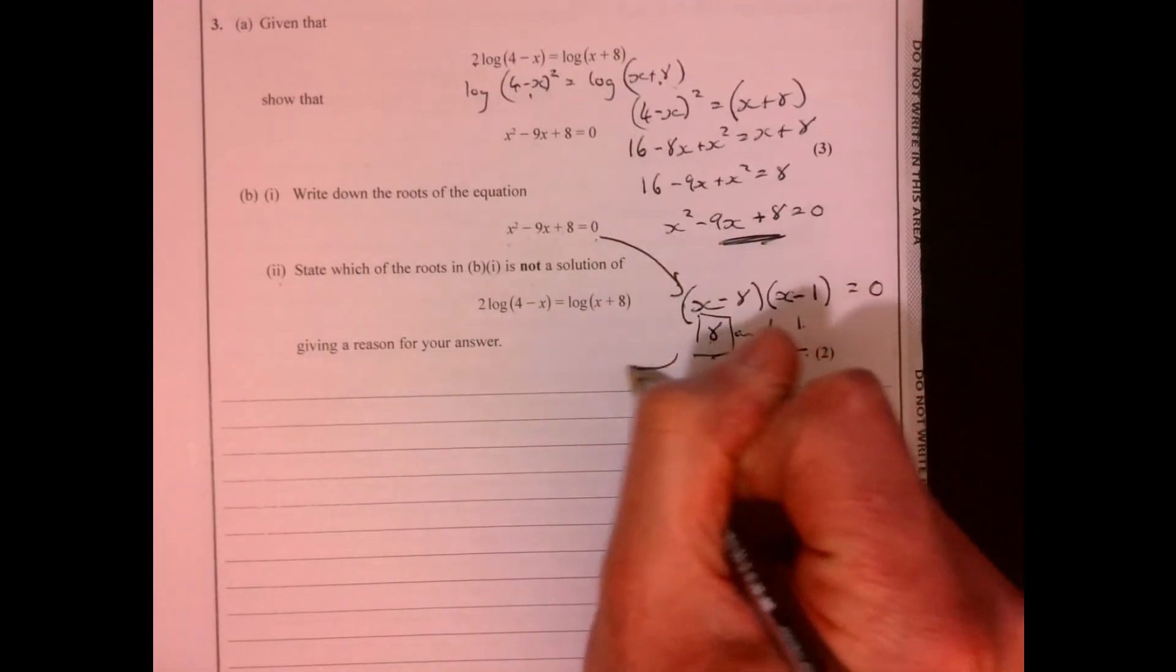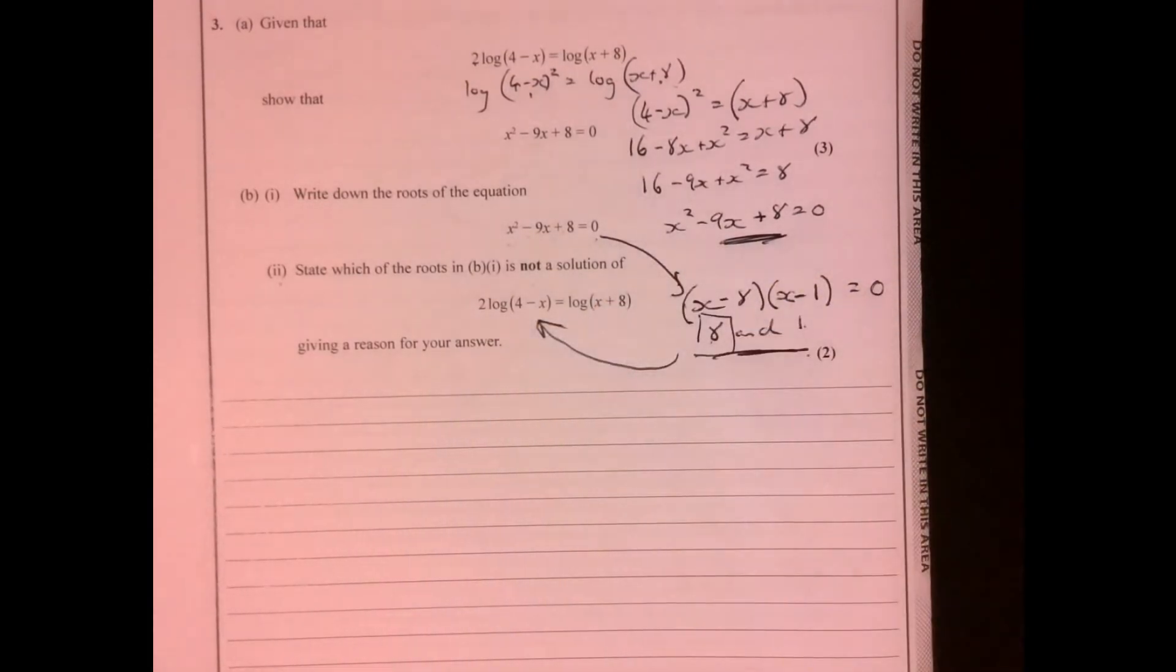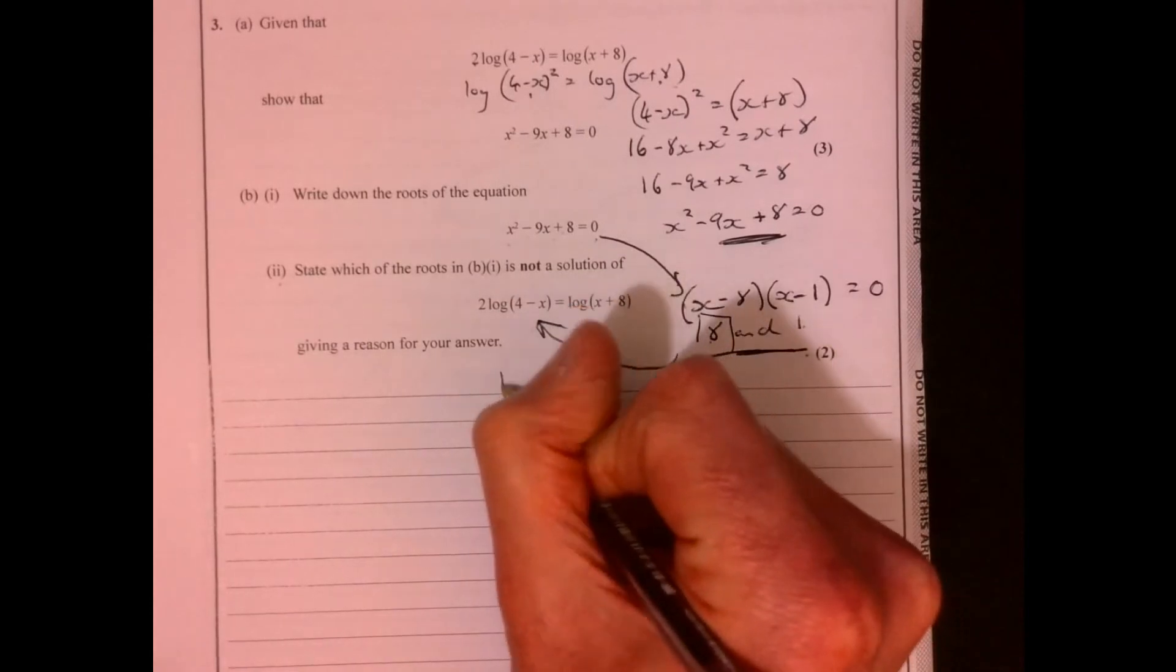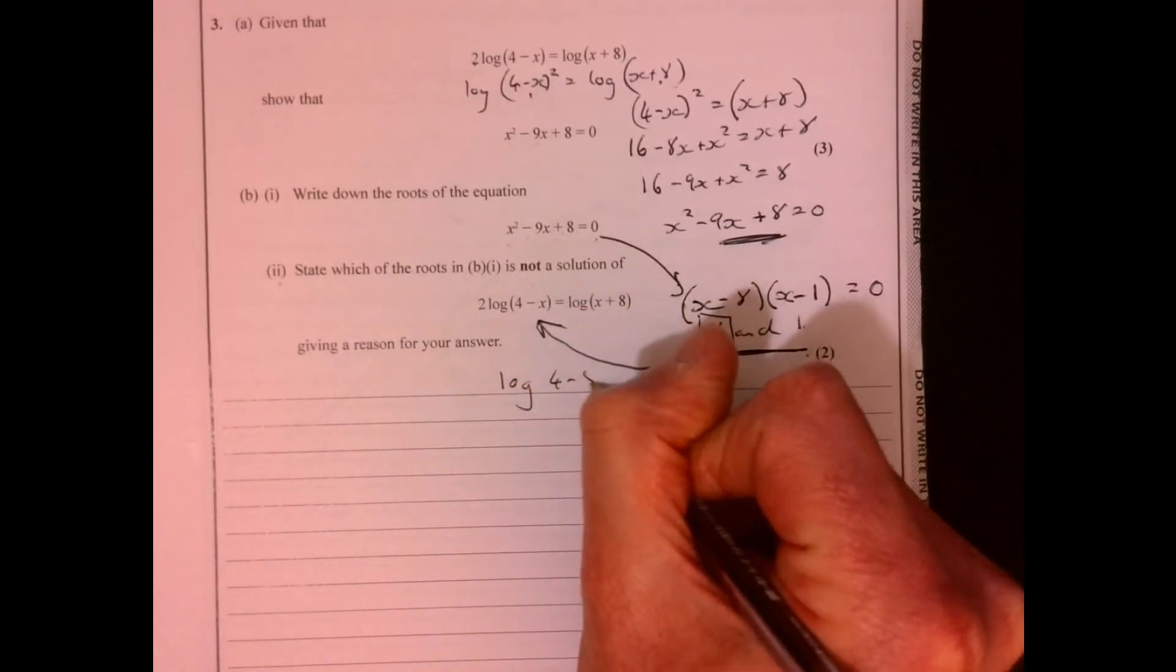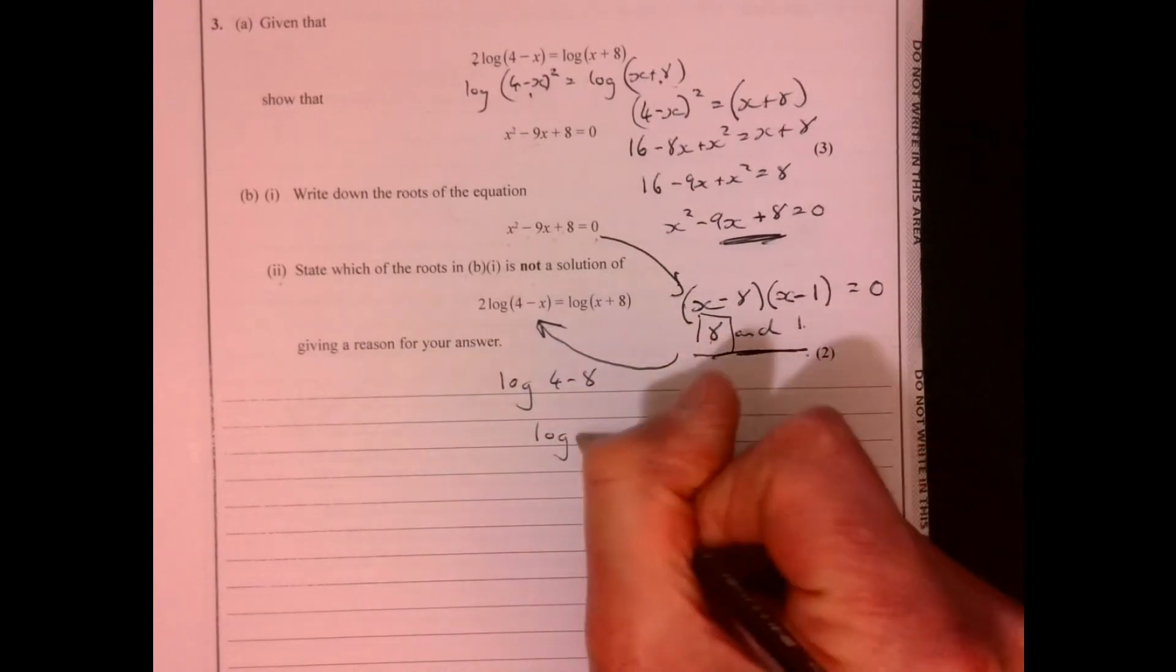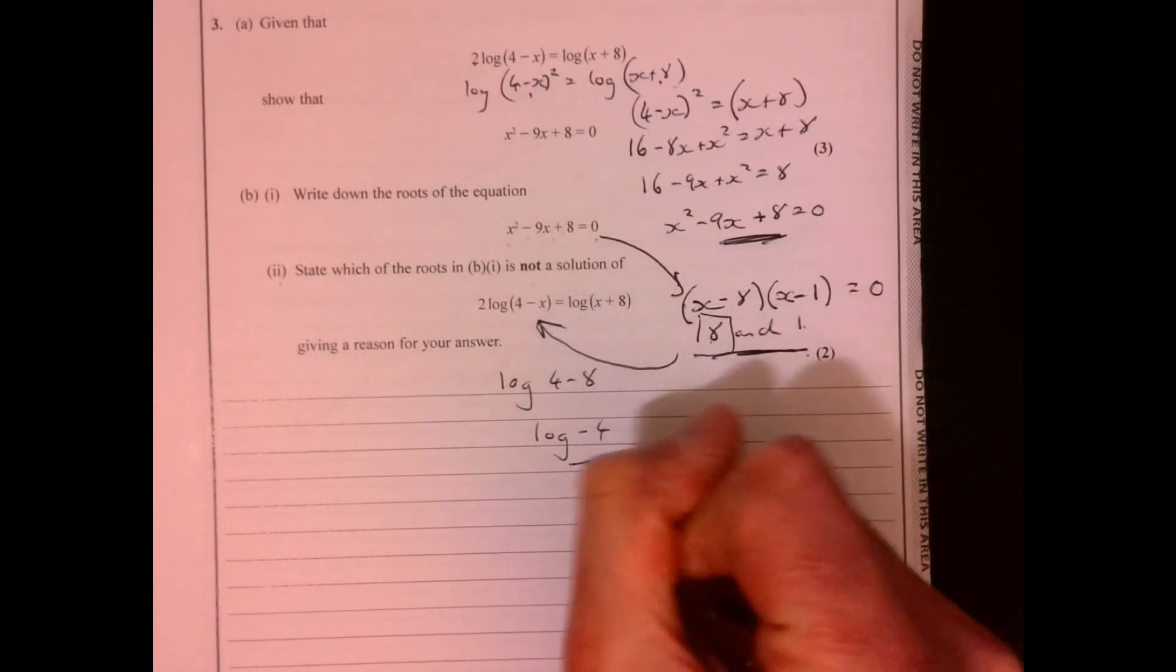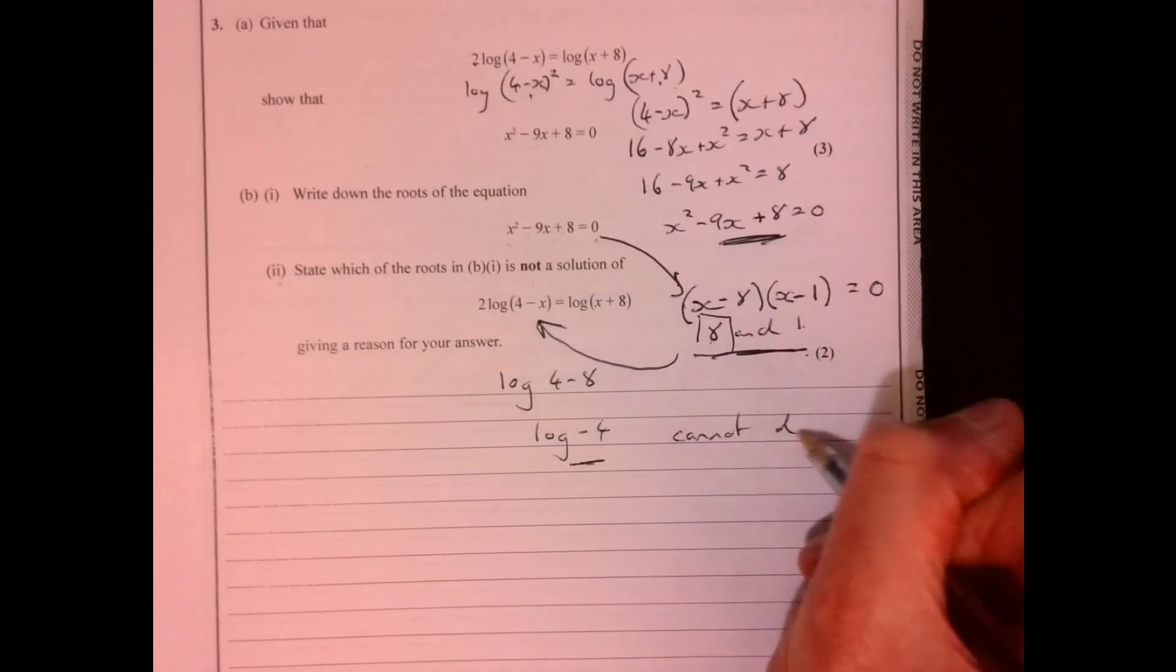Because if you think about what happens just here, so log 4 minus 8, I'm trying to do log of minus 4, which we cannot do.